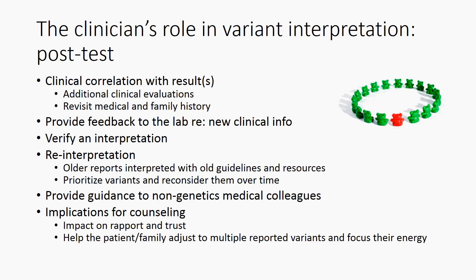While the pathogenicity of some genetic variants is well established, this is not true for the majority of variants. The clinician should understand the principles and the types of information used in variant interpretation, including how these have changed over time, and can incorporate variant interpretation activities into clinical practice. One way this is often done is through clinical correlation, assessing the clinical fit of a patient's clinical features and history with the disorder associated with a reported variant.